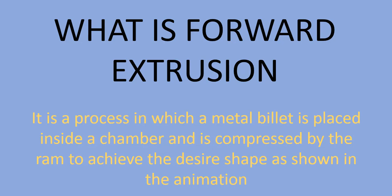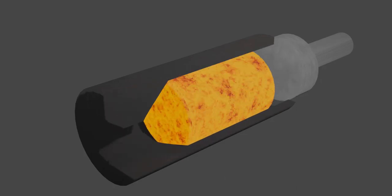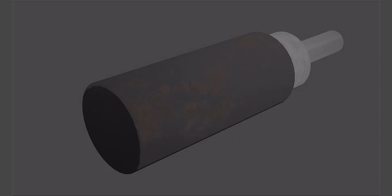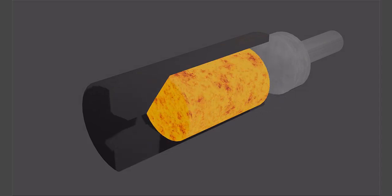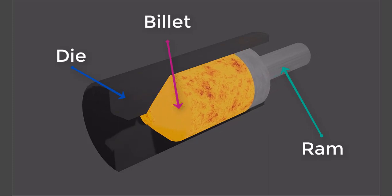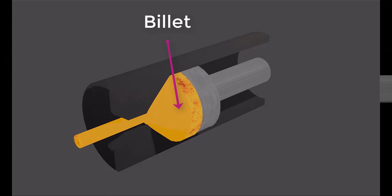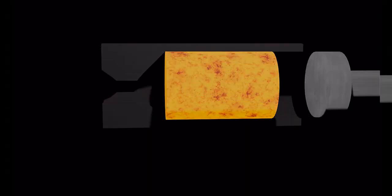In this animation, as you can see it is a sectional view and when we compress the billet by ram, my cylindrical billet shape is compressed to a pipe like structure. So basically it is used here to compress my billet into a cylindrical pipe.